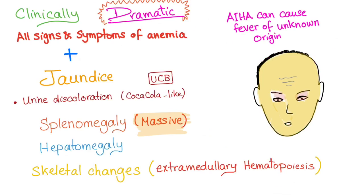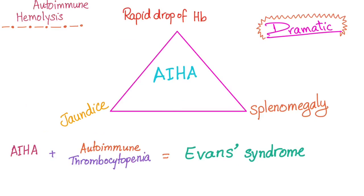Clinically, the signs and symptoms are the same as extravascular hemolysis, but they are dramatic. We have massive splenomegaly and rapid drop of hemoglobin. Autoimmune hemolysis has a triad of rapid drop of hemoglobin, jaundice, and splenomegaly — which is usually massive.